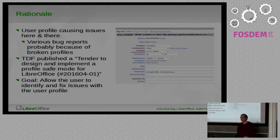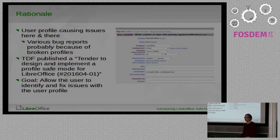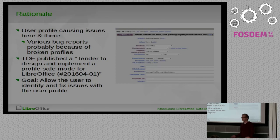Users were reporting problems that we couldn't reproduce, and often they were related to their user profile containing some broken settings. There is an example of a bug report: Writer crashes on startup because it fails to parse the registry modifications, which contains the settings the user changed. For users, the only solution was often to find the folder which contained the user profile and delete it. There was no real method to restore such a broken system.